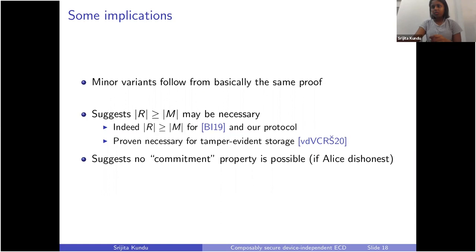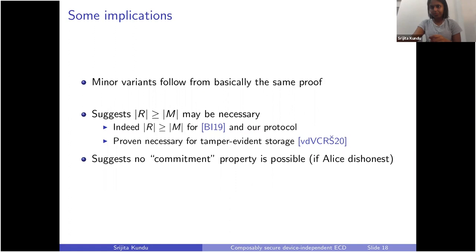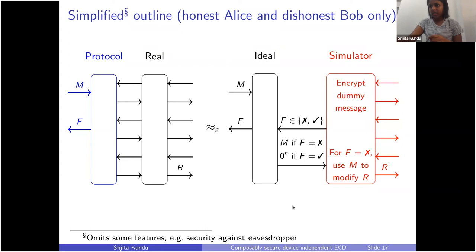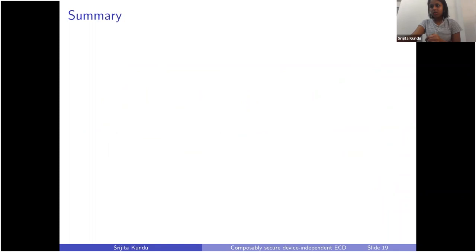Another thing we discovered is that if you want a modification of this task where Alice can also potentially be dishonest and you want Alice to commit to a message, that is kind of not possible — because here we show that we can modify the message later at any point from the dummy message to the actual message. Alice cannot actually commit to a message in this protocol, so Bob cannot force Alice to commit to a message.